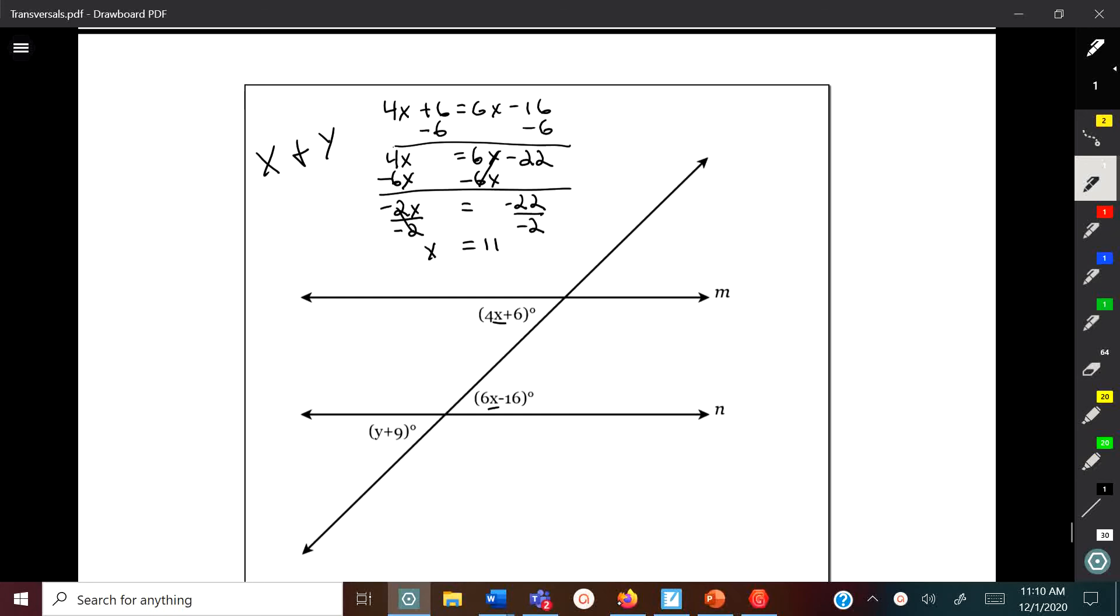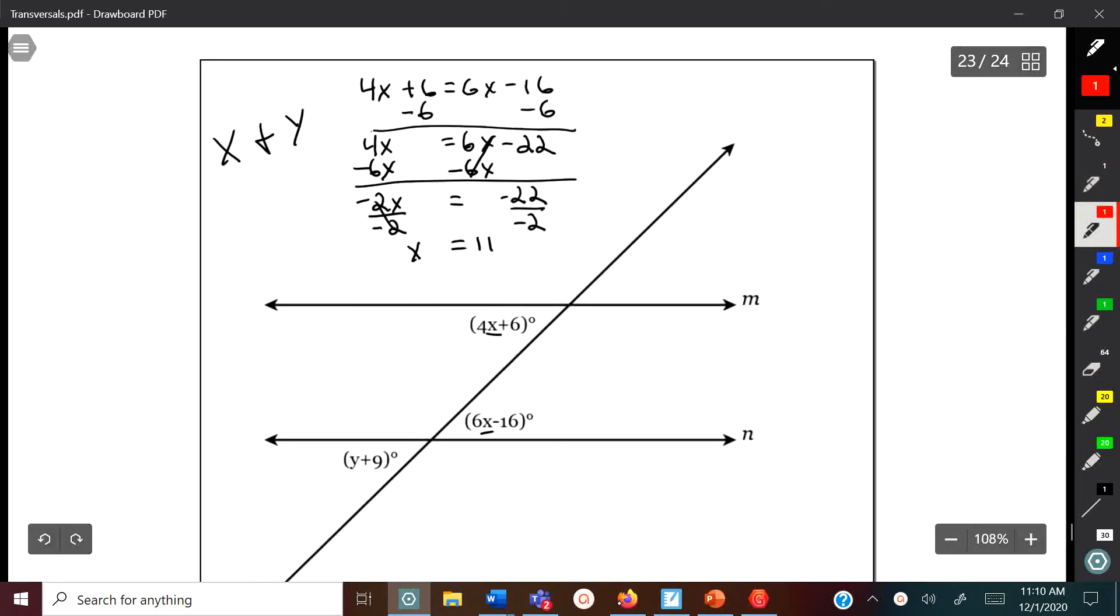We found out what x is, but now we need to find out what y is. There's two ways to go about it. I could work with 4x plus 6 and y plus 9, or I could work with 6x minus 16 and y plus 9. Either way works. You could just solve what this angle is and then work with it, or you could just work with it all together and do one problem.